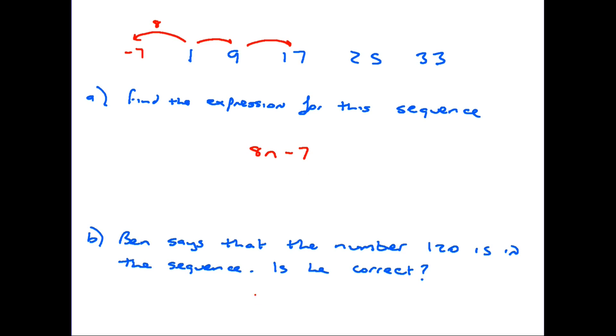Now part B. Ben says that the number 120 is in this sequence. Is he correct? Now of course we can go back to what we just did. We can actually write this as 8n minus 7 equals 120 and we can work out whether or not this gives us a full integer as a number or a decimal. However it is quite amazing how often in an exam there is a shortcut to an answer to a question such as this. Take a look at the sequence itself.